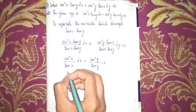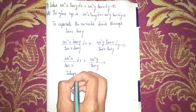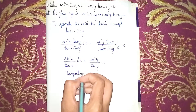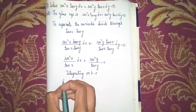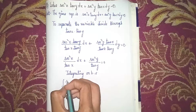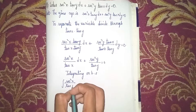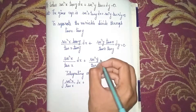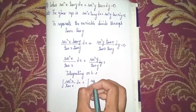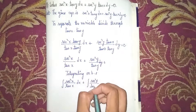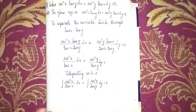Now integrating both sides. It becomes: integrate secant squared x over tan x dx plus integrate secant squared y over tan y dy equals zero.